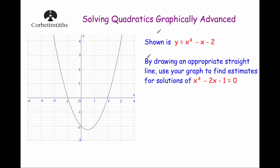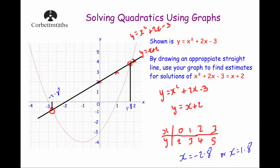Let's look at our second example. This time it shows us the graph of the curve y equals x squared minus x minus 2. It says, by drawing an appropriate straight line, use your graph to find estimates for the solutions of x squared minus 2x minus 1 equals 0. As you notice, the graph we've been given is completely different to the expression on the left-hand side of the equation. In our last example, the equation to solve and the curve were both the same — x squared plus 2x minus 3.